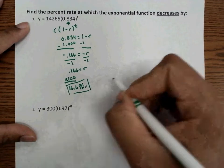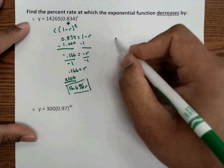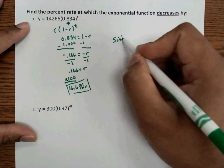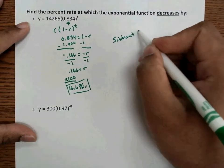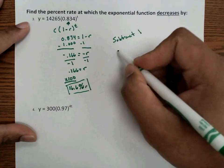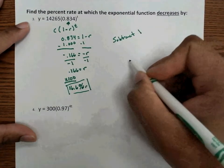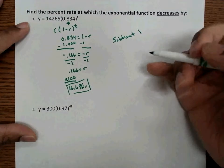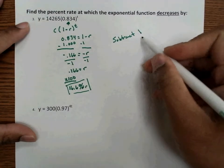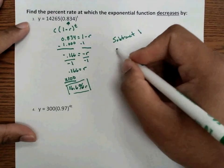Again, just like before, the shortcut: subtract 1. And with this one, there's a little extra that you have to do, because even though you're subtracting them by 1, you still have to divide by negative 1 when it's decay.